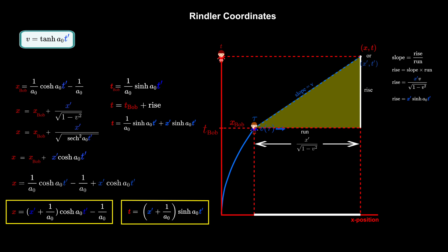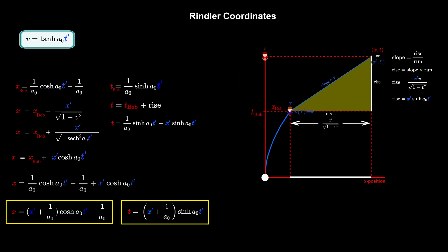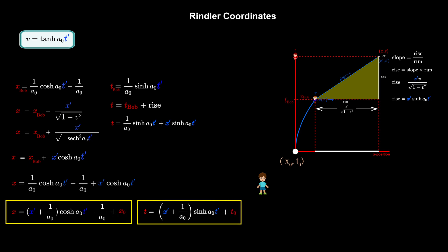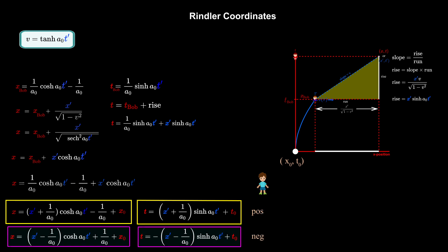These Rindler equations hold true as long as Bob began his journey at rest with Alice at the origin. However, imagine another person, Egbert, who is at rest with respect to Alice but some distance away. If he views Alice and Bob's origin to be at the location x-not comma t-not, then he must add these numbers to the Rindler equations in order for the equations to describe the relationship between him and Bob. Another detail is that these equations hold regardless of the sign of the acceleration — simply replace a-not with negative a-not everywhere, and the equations are valid when Bob is undergoing negative acceleration, meaning acceleration back towards Alice.